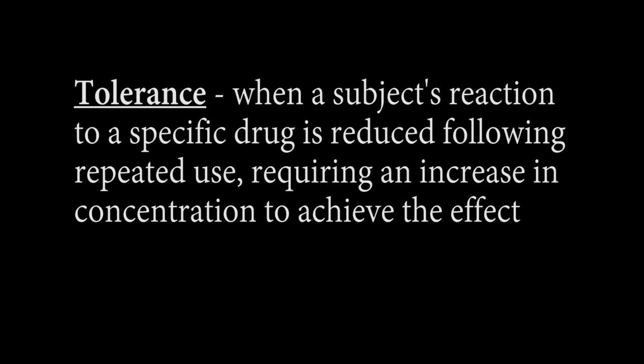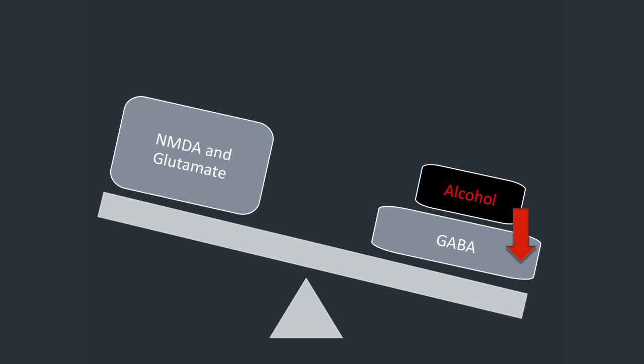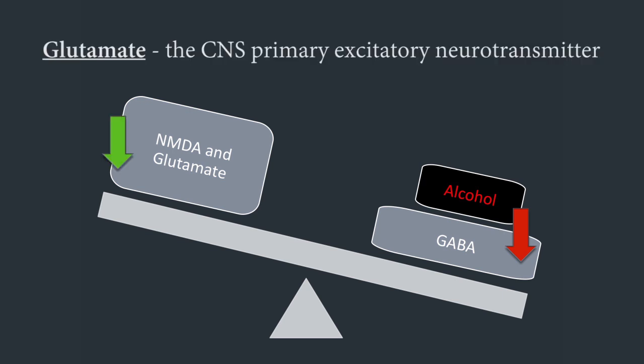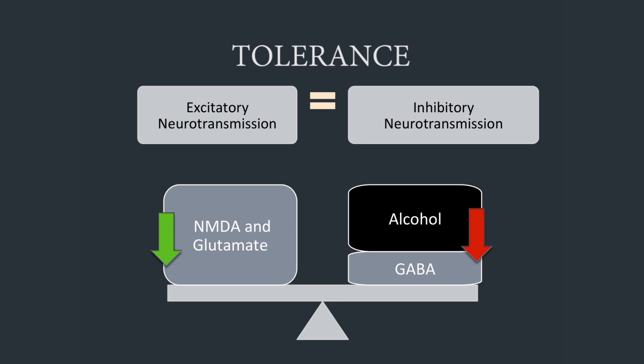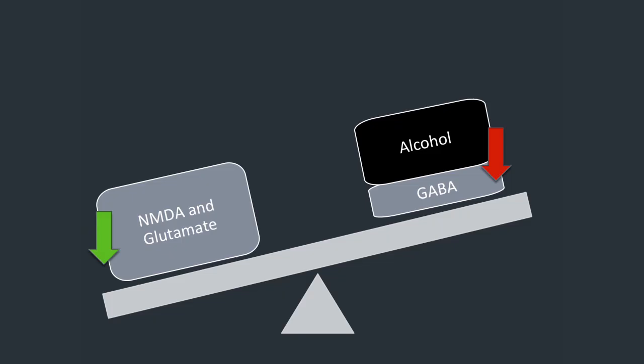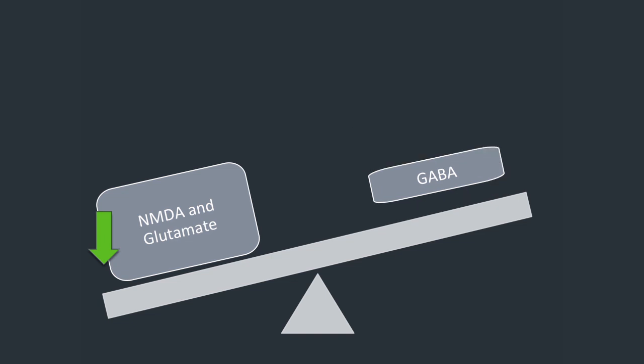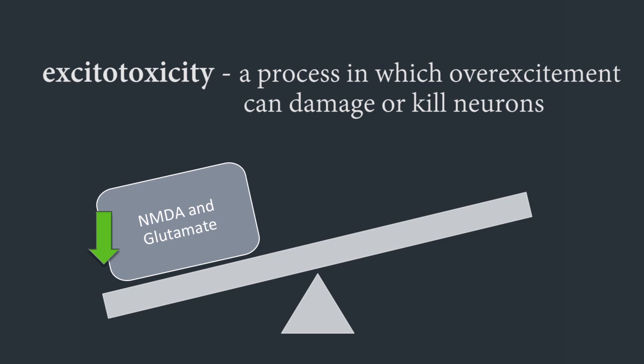But hangovers aren't forever. It's chronic exposure to alcohol that causes long-term consequences. New alcohol users may need to learn their limits, but over time these limits can increase — this is what's called tolerance. With alcohol, tolerance is caused specifically by an increase in glutamate, the central nervous system's primary excitatory neurotransmitter. This glutamate combats the brain's increasing amount of inhibition caused by the alcohol. Once alcohol is taken away, the brain's inhibitory functioning returns to normal, but glutamate levels remain abnormally high, causing seizures, brain damage, and even excitotoxicity — a process in which overexcitement can damage or kill neurons.